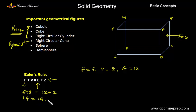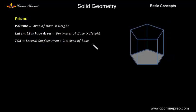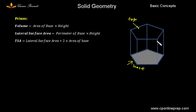Now let's move ahead and talk about prism. A prism is any solid figure with congruent base and top. Both base and top are congruent. Here I have taken a pentagon and it is surrounded by rectangular figures. The volume for a prism is area of base into height, where height is the distance between the base and the top.